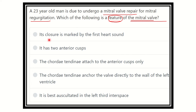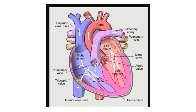The options are: it is closed and is marked by the first heart sound; it has two anterior cusps; the chordae tendineae are attached to the anterior cusp only; the chordae tendineae anchor the valve directly to the wall of the left ventricle; or it is best auscultated in the left third intercostal space.